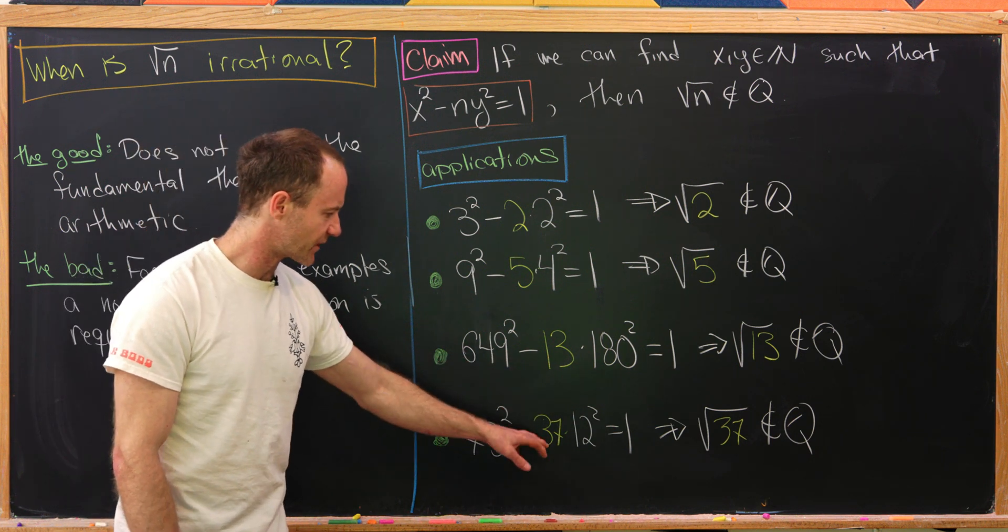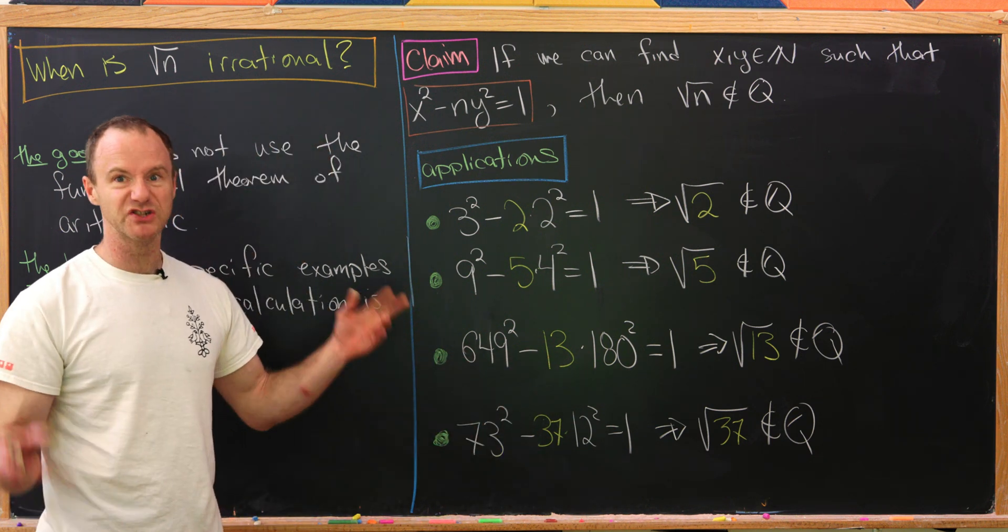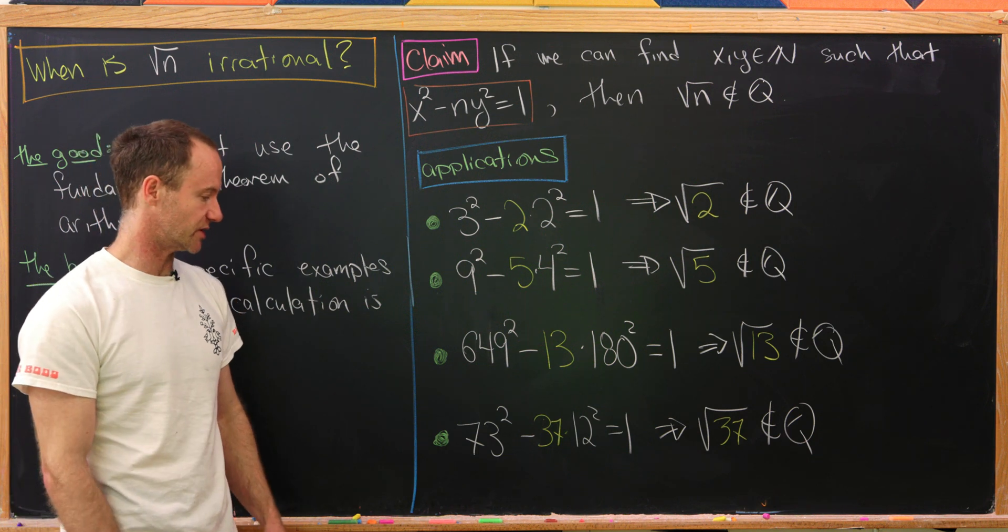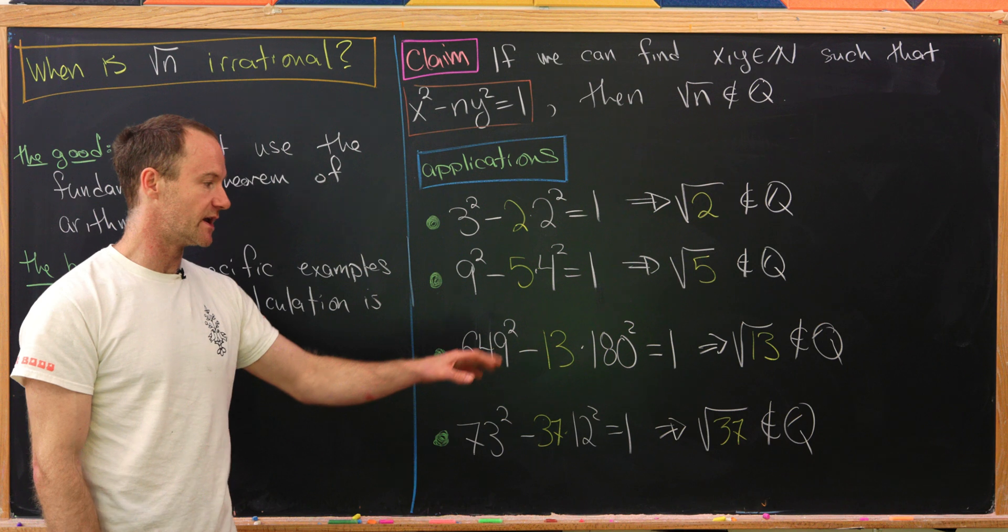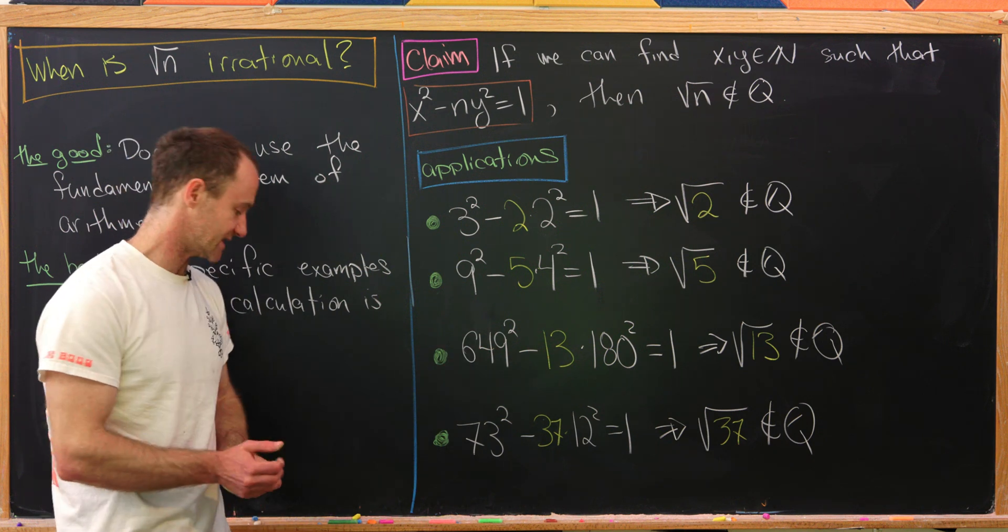But notice if we go up from 13 to 37, we get a much nicer, smaller solution. 73 squared minus 37 times 12 squared is 1. That means square root of 37 is irrational.